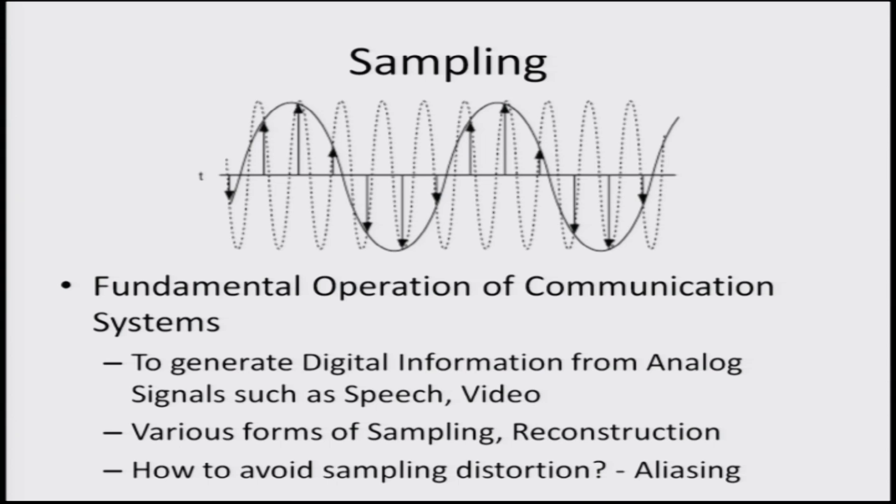How do you process the information? How do you sample these signals? What are the properties of the sampling operation? What are the distortions introduced by the sampling operation? How do you ensure that the original analog information can be reconstructed accurately from the sampled signal or from the digital information generated from the sampled signal?